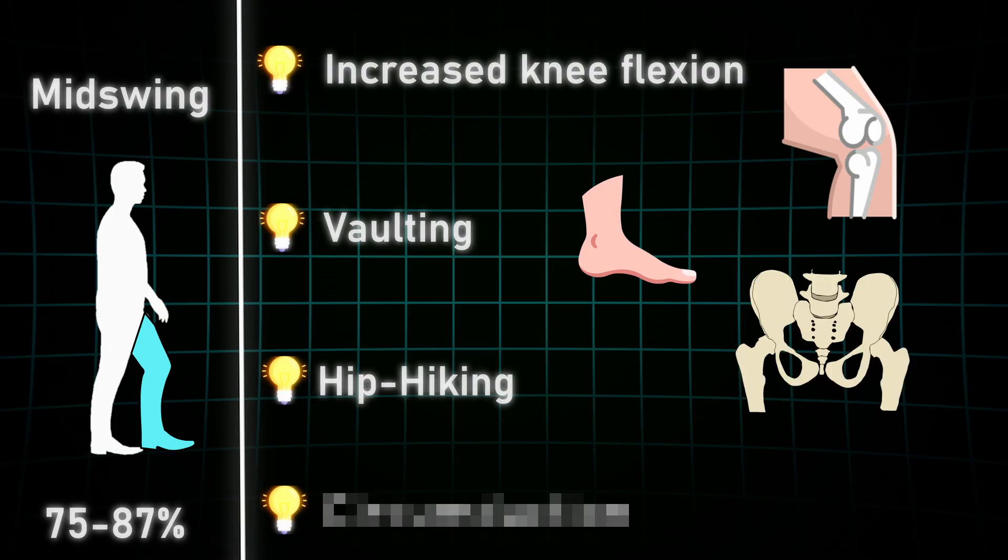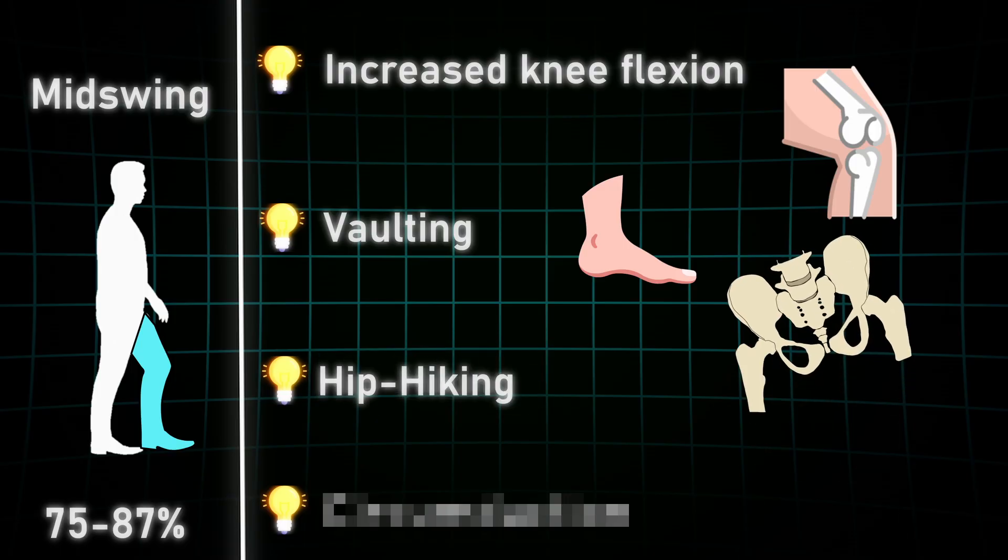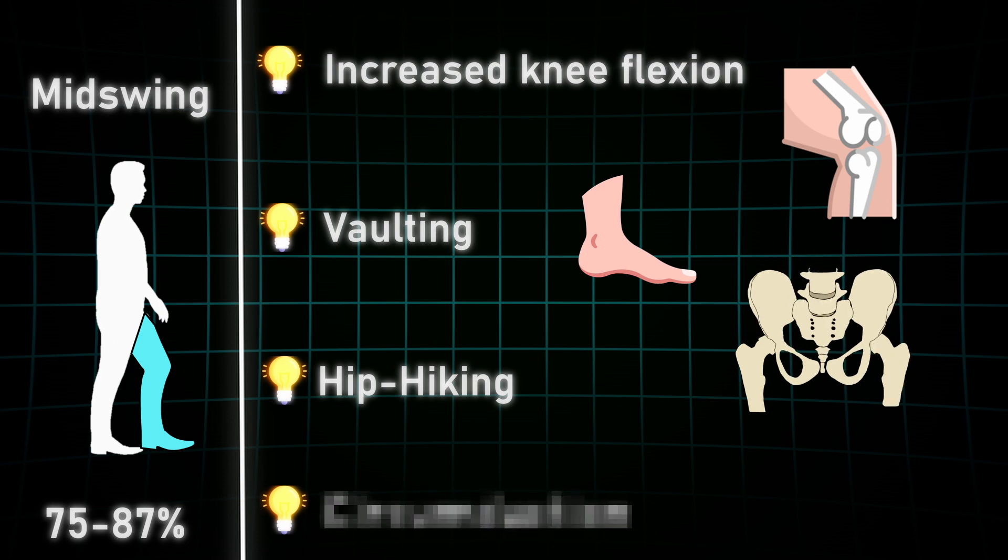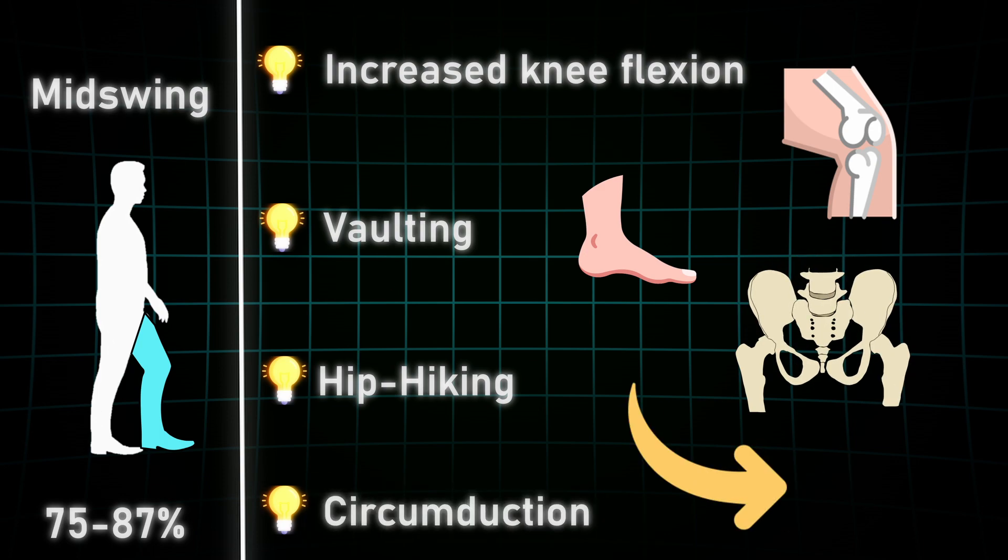Four, the circumduction, in which the whole leg is abducted in the frontal plane and swings through in a circular motion to avoid tripping. So if you see these compensations in this gait phase, look for the cause and not just for symptoms. Treat the cause and the symptoms disappear.